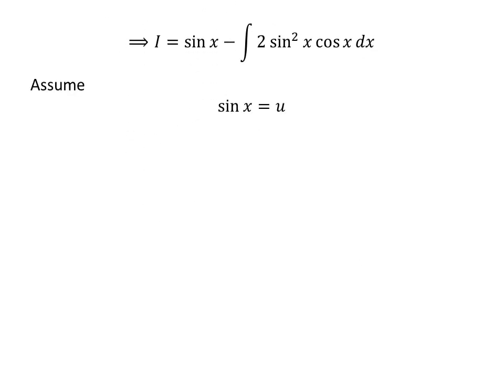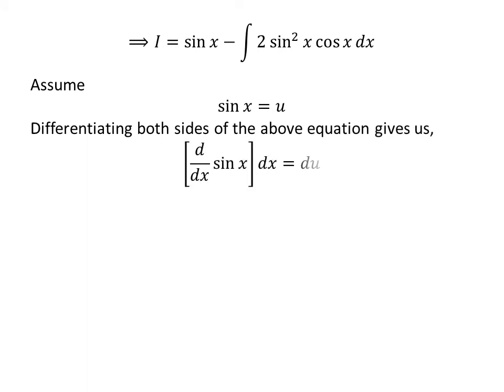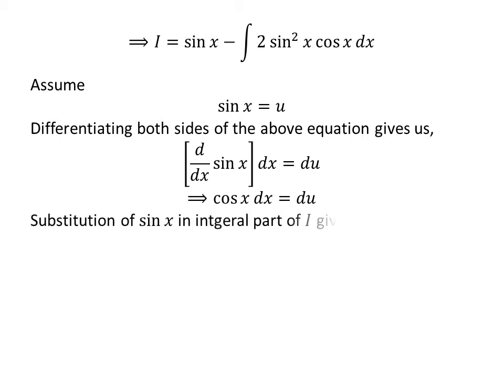Let us solve the integral of 2 times sine squared of x times cosine of x. I have applied the substitution method to solve this integral. Let us assume sine of x is equal to u. Differentiating both sides gives us cosine of x times dx equals du, since the derivative of sine of x is cosine of x.